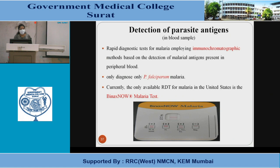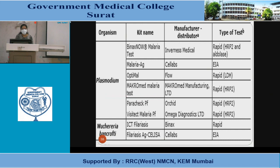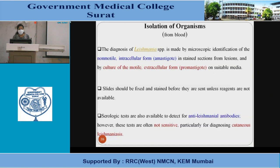For detection of parasite antigens in blood samples, rapid diagnostic tests for malaria employ an immunochromatographic method based on detection of malaria antigen in peripheral blood — this is for diagnosis of P. falciparum malaria only, and is currently the only available rapid diagnostic test for malaria. There are two formats: one for P. falciparum, and one for P. falciparum mixed with ovale and vivax. Commercial kit names are available for diagnosis.